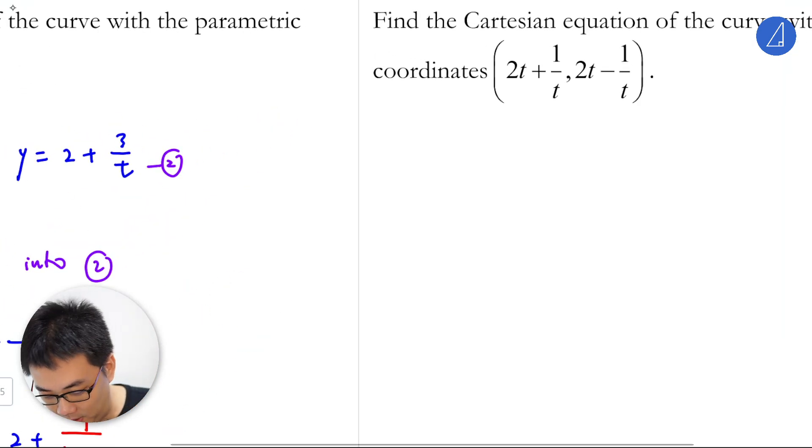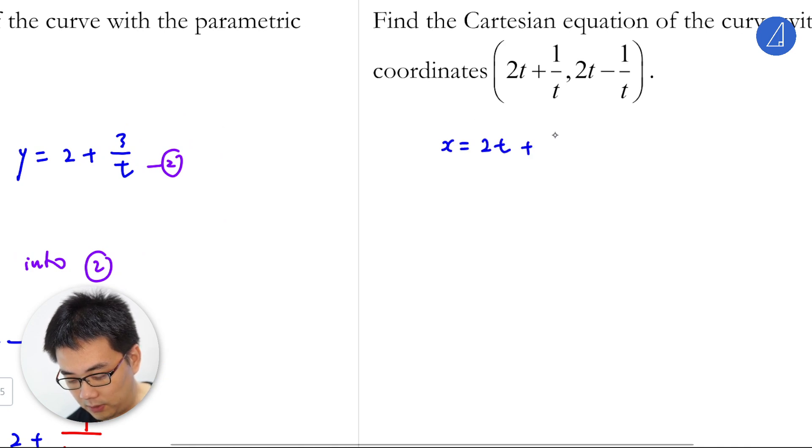So the next one just needs some algebra. You just let, essentially x is 2t plus 1 over t, right? Then y is also 2t minus 1 over t.